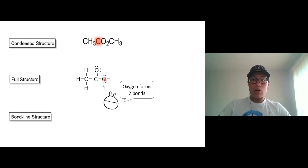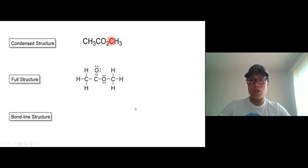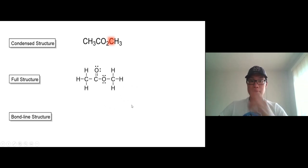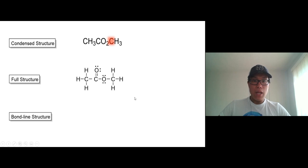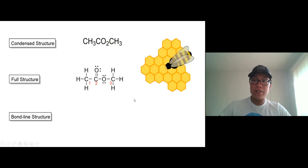This oxygen right here — remember oxygen is group six, two bonds. One bond goes to carbon, and the other bond goes to the other carbon, the CH3 right there. Now convert the full structure to a bond line structure. When you draw a bond line structure, follow a beehive pattern — like a hexagon shape.